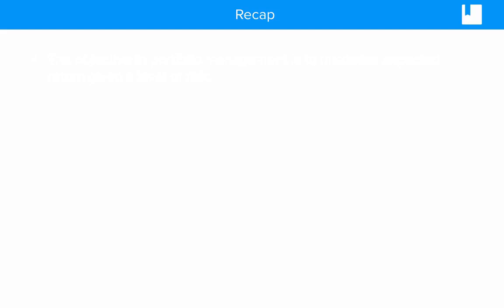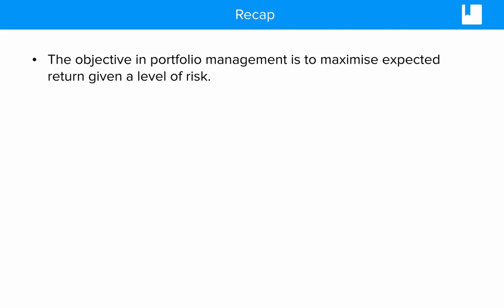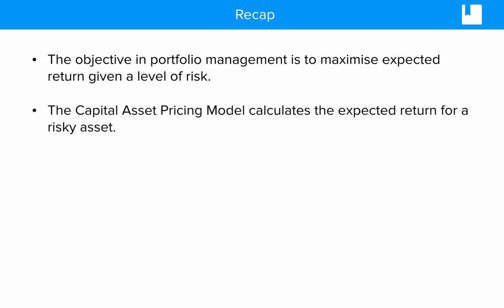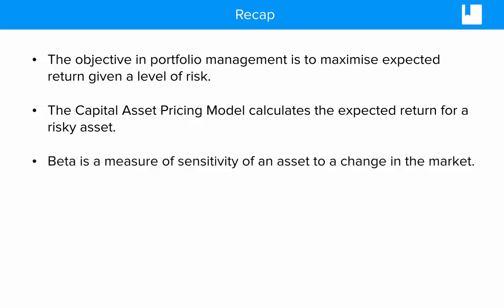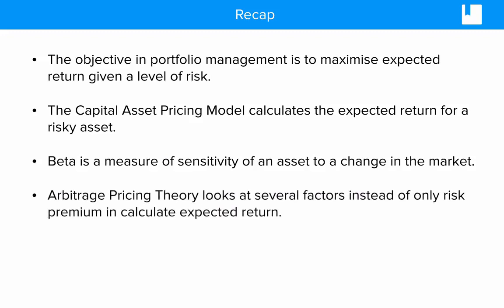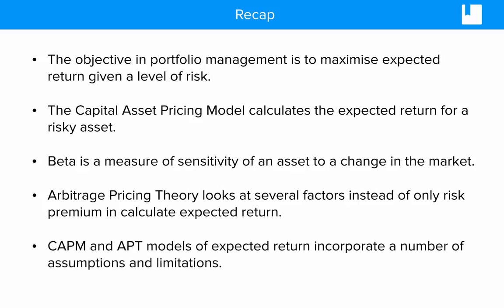Let's recap on everything we've covered in the CAPM model. We first started with the objective of portfolio management: to maximise expected return for a given level of risk. We then looked at a model that generates an expected return for a risky asset based on a level of systematic risk, and examined beta as a measure of sensitivity of an asset to a change in the market, and how to calculate and interpret it. Next, we looked at Arbitrage Pricing Theory as an extended version of CAPM, which takes into account several factors instead of only the risk premium. We identified that both the CAPM and APT models of expected return incorporate a number of assumptions and limitations.